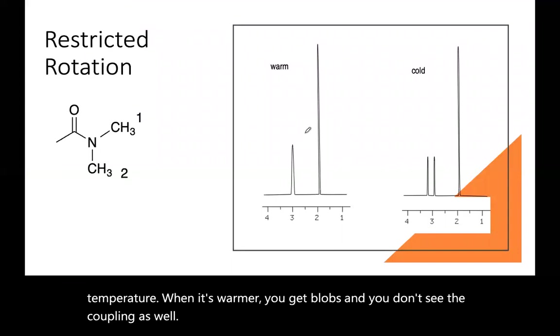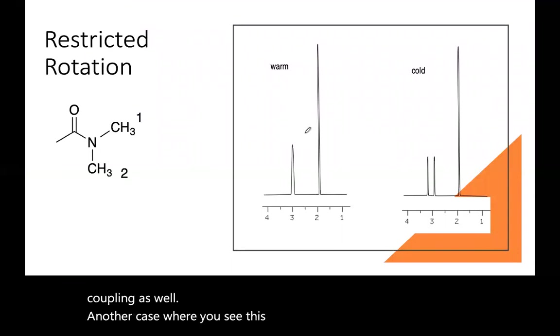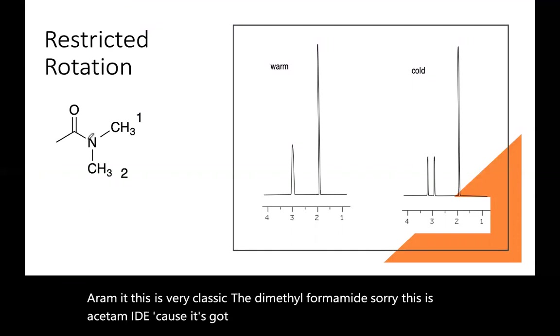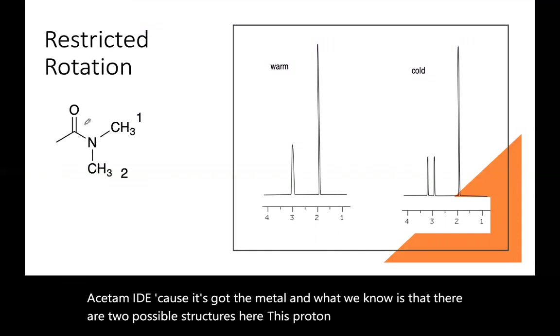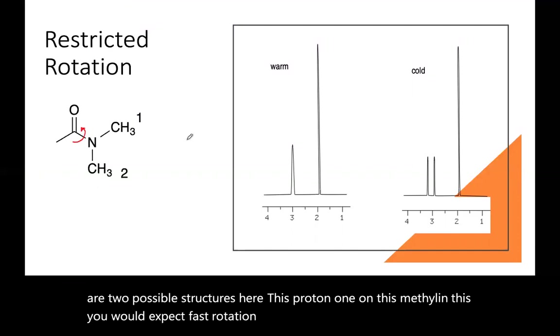Another case where you see this is our amide. This is very classic, the dimethyl formamide. Oh, sorry. This is acetamide because it's got the methyl. And what we know is that there are two possible structures here. This proton one on this methyl and this, you would expect fast rotation around here. And then these would show up as one peak.